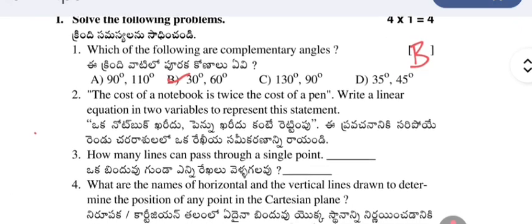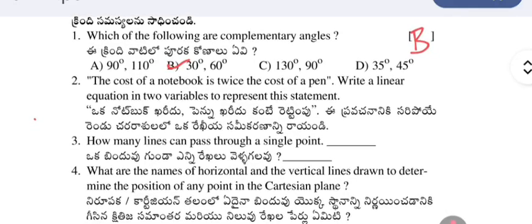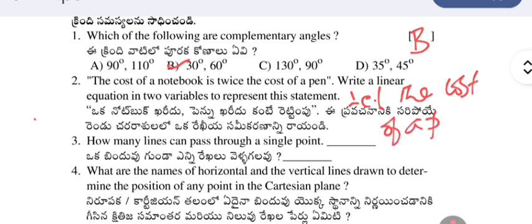The cost of a notebook is twice the cost of a pen — write a linear equation in two variables to represent this statement. Let the cost of a pen be x and the cost of a notebook be y. Then the cost of the notebook equals twice the cost of a pen, so y = 2x, which can be written as y minus 2x = 0. This is the required equation.